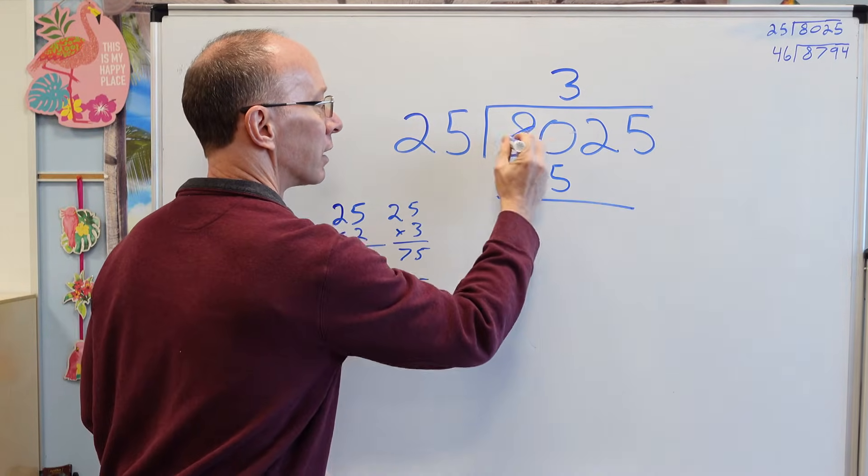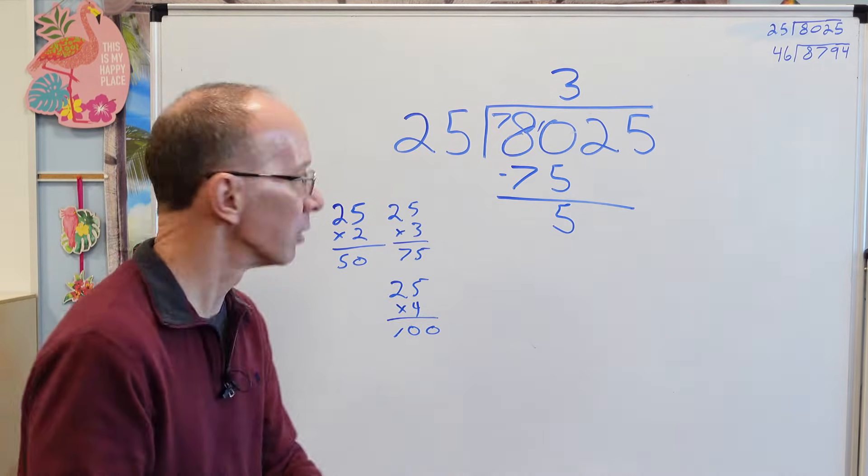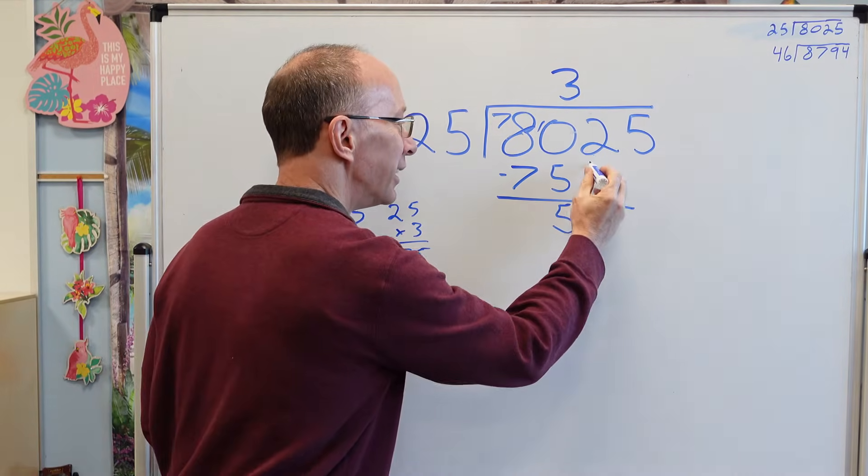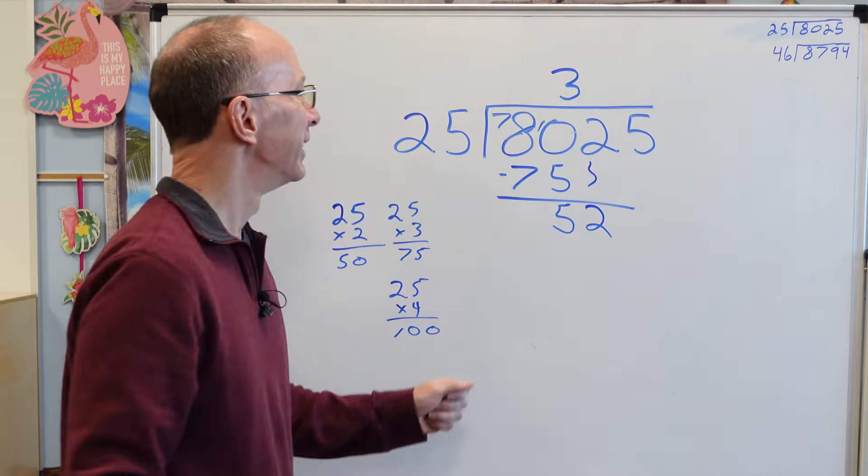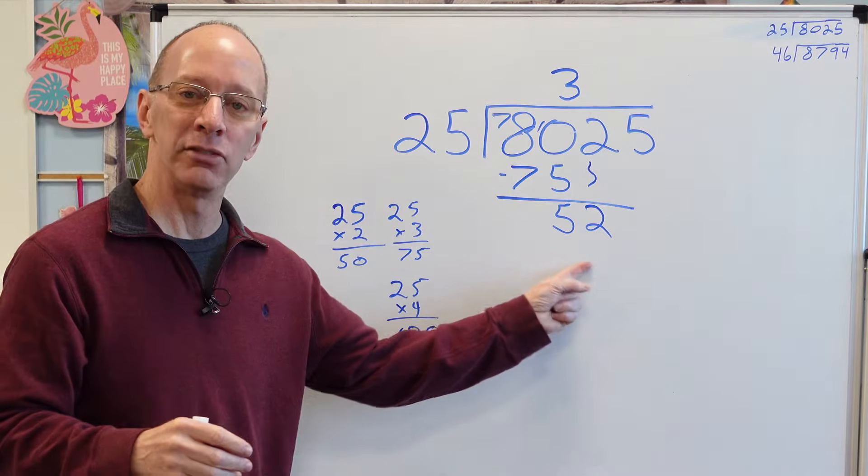right above the 0 because I'm dealing with the 80. So 3 times 25 would be 75, and then I subtract, all right? So that would be 5, and then bring that next number down. Bring it down, bring it down right over here. So now we start the whole process over. How many times can I put 25 into 52?